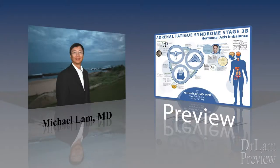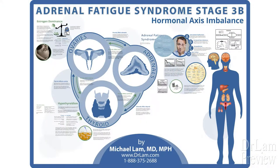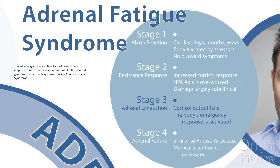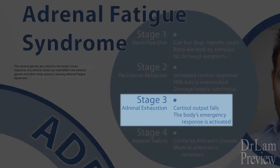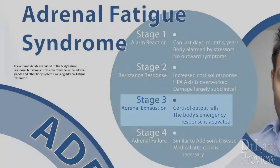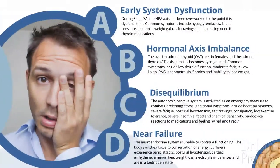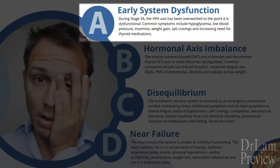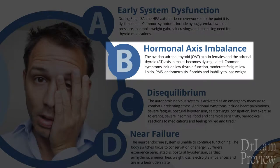This is Dr. Lam welcoming you to our discussion on stage 3b adrenal fatigue syndrome. Stage 3b is also called hormonal axis imbalance. Remember that the whole stage 3 itself is called adrenal exhaustion — it has four phases. Stage 3a is usually characterized by HPA axis dysregulation, while in stage 3b we're starting to see a hormonal axis imbalance, which we're going to go into more now.